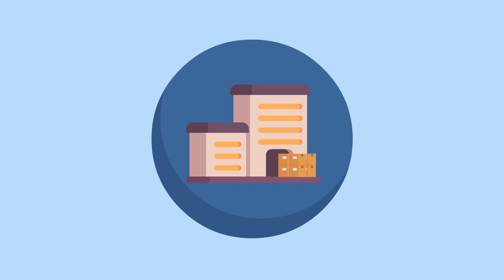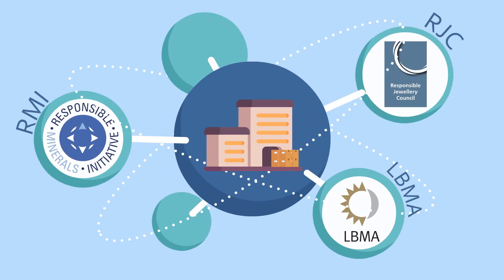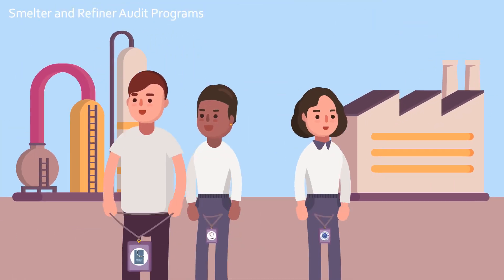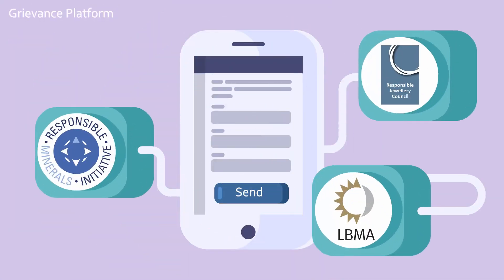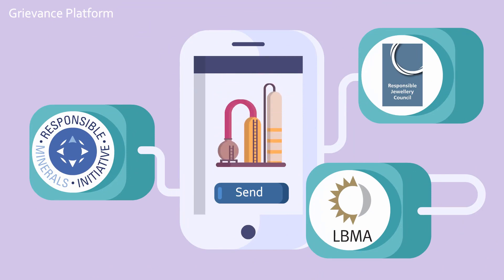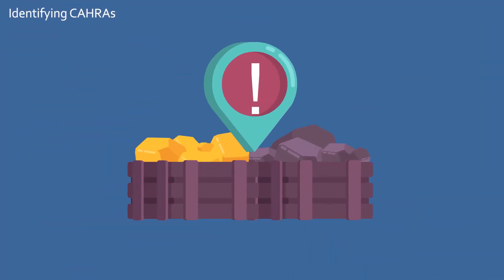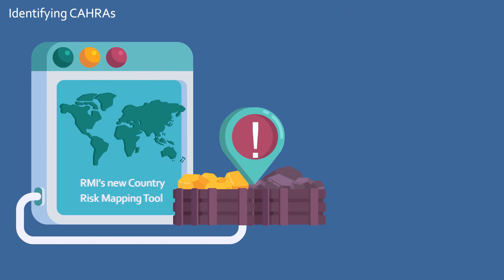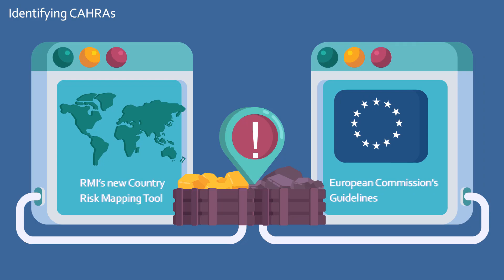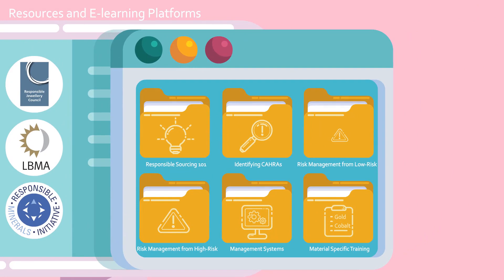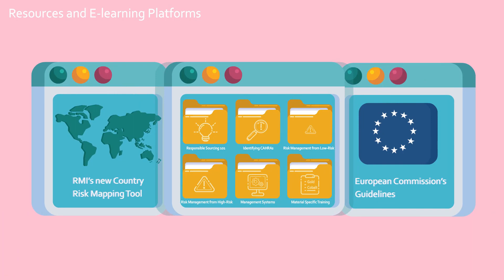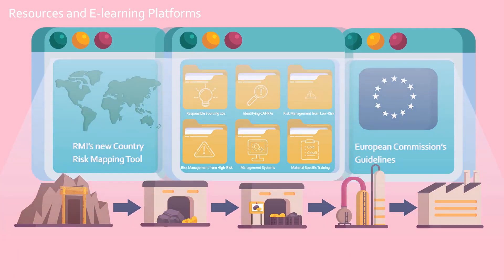Responsibility for due diligence lies with your company. But industry initiatives by RMI, RJC, LBMA, and many others can support your due diligence activities — we each offer due diligence audit programs. Additionally, RJC audits and certifies the due diligence practices of all other company types in the jewelry supply chain, from mine to retail. Our shared online grievance platform can help screen and address grievances linked to smelters and refiners. To identify areas you consider to be high-risk, use the RMI's new Country Risk Mapping Tool, as well as the European Commission's guidelines. We also provide further resources and e-learning lessons explaining each aspect of the requirements and how to meet them. We invite you to take advantage of these resources as you progressively build effective due diligence in your supply chain.